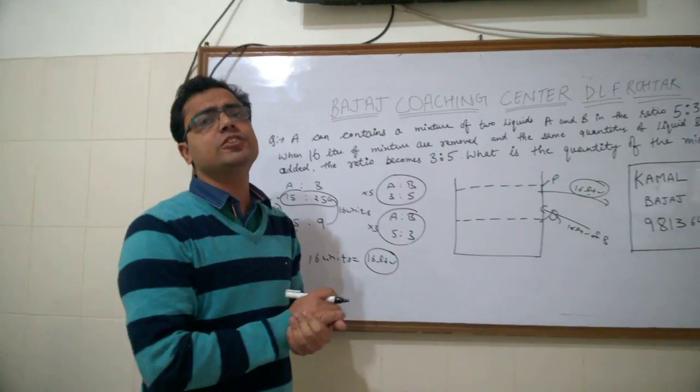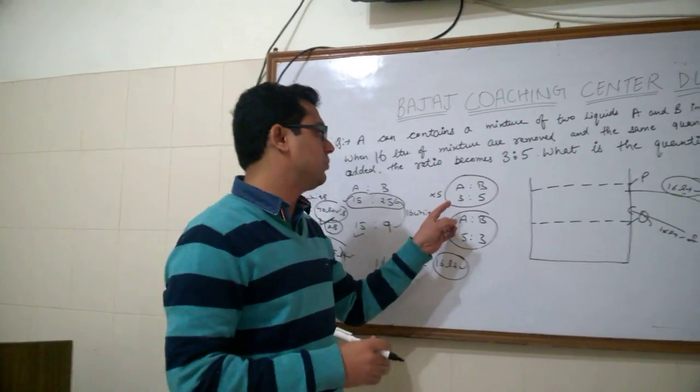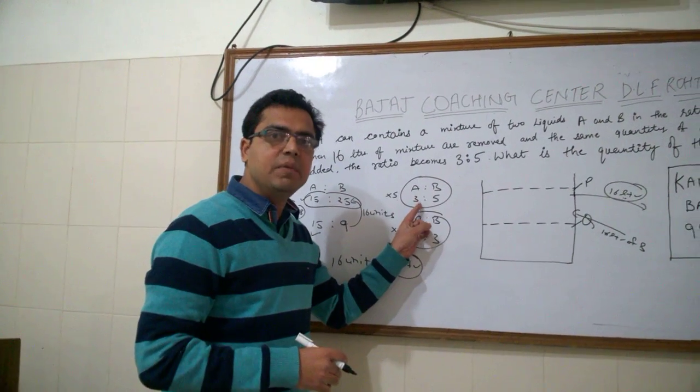If the question was, what is the present quantity of A, the present quantity of A is 3 by 8.